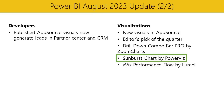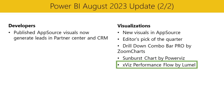Next, we've got the Sunburst Chart by PowerViz — a powerful visualization designed to display hierarchical data in a user-friendly and intuitive format. With its concentric circle design, you can easily display part-to-whole relationships and gain valuable insights. We also have XViz Performance Flow by Lumio, an integrated business flow monitoring visual with an interactive KPI tree visualization for organizational performance management. It offers insights into people, places, processes, and entities with performance indicators, trendlines, and advanced alerting on goals, metrics, and their variances.